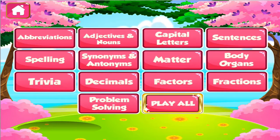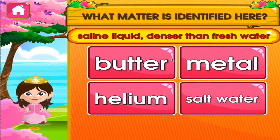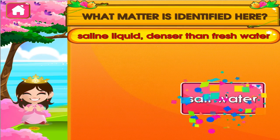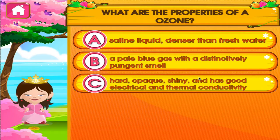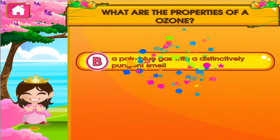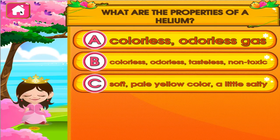Choose the activity you want to play. Matter. Tap the correct answer. You can do this! Tap the correct answer. Woo-hoo! Tap the correct answer.